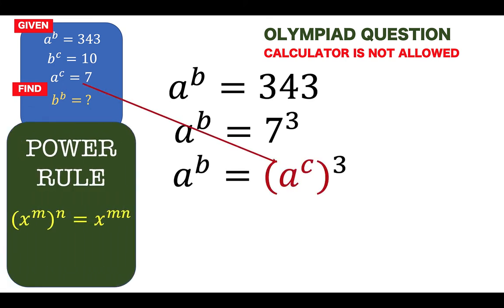Now, let's recall the power rule of exponents. When we have the quantity X raised to M raised to N, that is equal to X raised to the product of M times N.